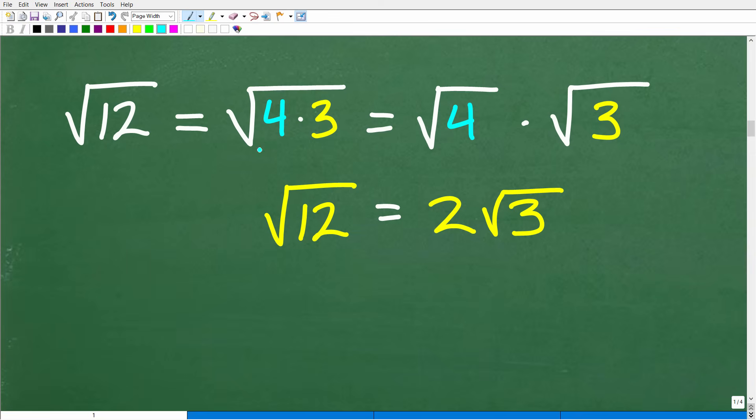So the square root of 12 is equal to the square root of 4 times 3. Now, this is one big square root. And by the way, this property works in reverse. If I had this problem right here, the square root of 4 times the square root of 3, I can put this as the square root of 4 times 3. So it goes both ways. The square root of 4 times 3 can break this up into its two individual components. So the square root of 4 times the square root of 3.